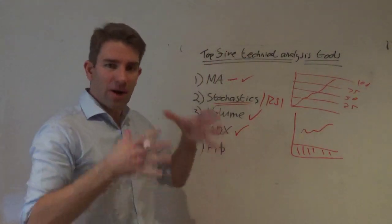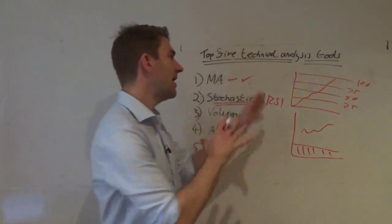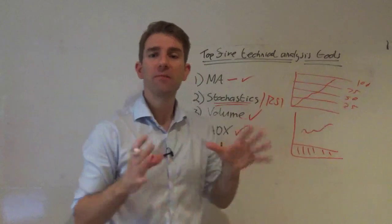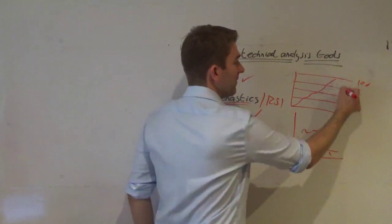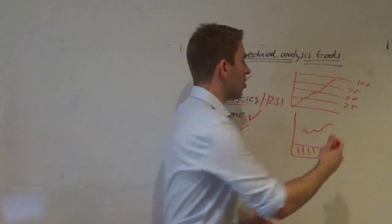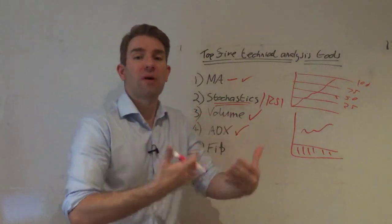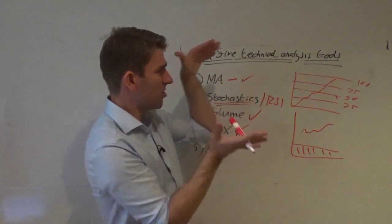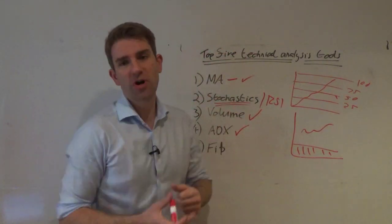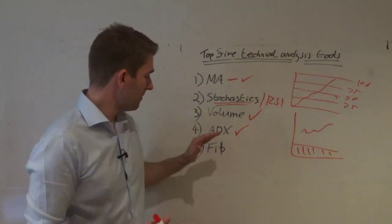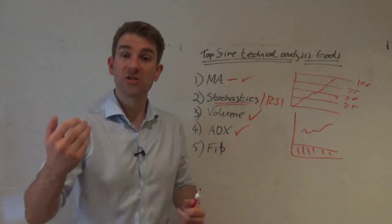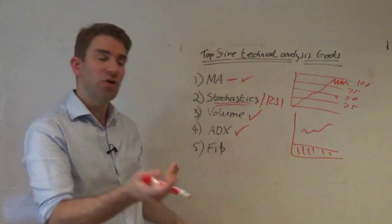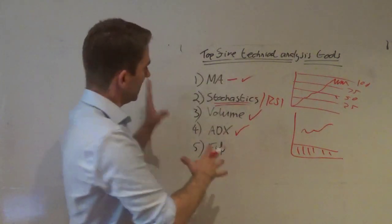Whether you use exact fib numbers or quadrants doesn't really matter — all you're trying to do is structure your trade with boundaries. You're saying: I want to buy a pullback, but if we go below the 50% level the strength isn't there. Fibonacci retracement is very good for quantifying the strength of the pullback — is it a strong pullback that might reverse, or is it flagging at highs like a tight bull flag? You can quantify it with your fib.